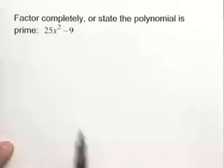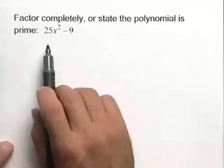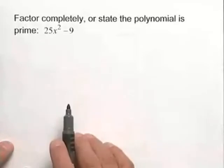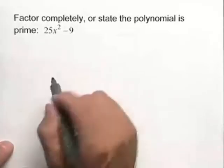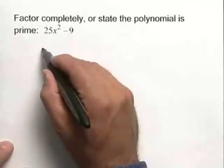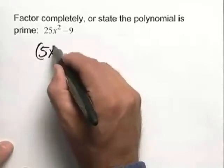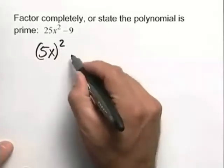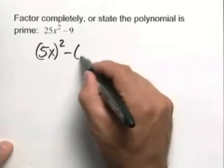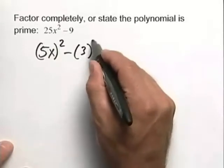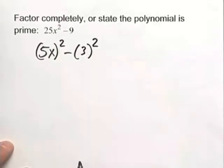Let's factor a binomial. We have 25x squared minus 9. Note that 25 is a perfect square, so we can write this as 5x, the quantity squared, minus 3 squared. This is an example of a difference of two squares.